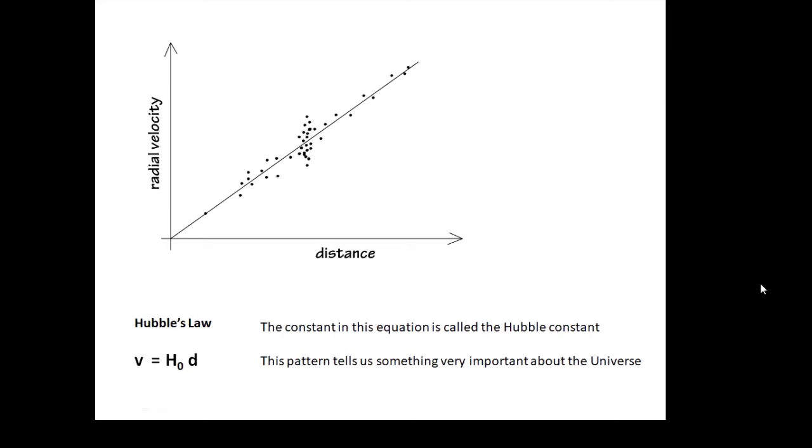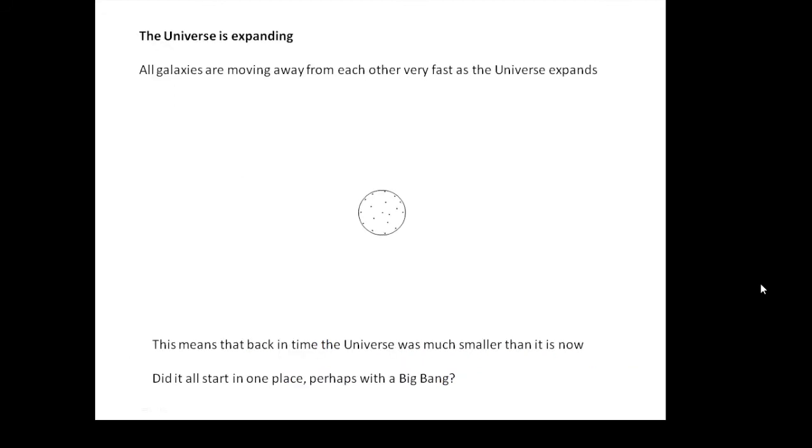This tells us something very important about the universe: the universe is expanding. The universe is getting bigger. When I say that all galaxies are moving away from us, they're actually all moving away from each other as the universe expands. All of these galaxies are moving away from each other. You can think of it like putting a cake in the oven which has raisins in it—as the cake gets bigger and bigger, the raisins get further and further apart. This is basically what the universe is doing.